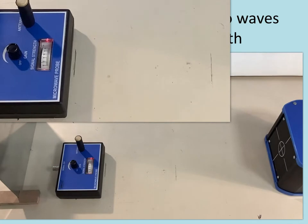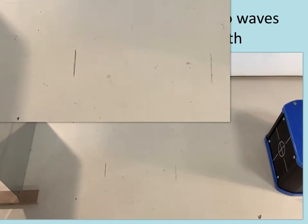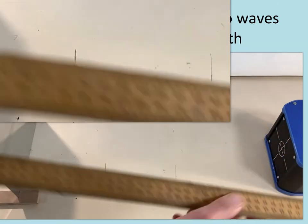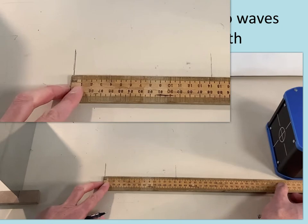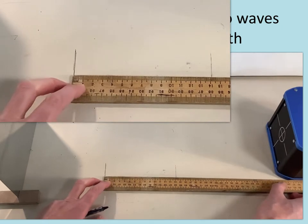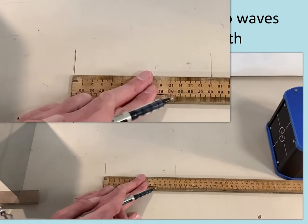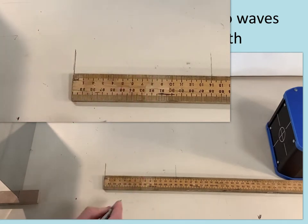So I've gone from zero up to ten nodes and now I can measure the distance between those using a rather excessively long meter ruler and if I put that down I can see that that is about 14 centimeters.